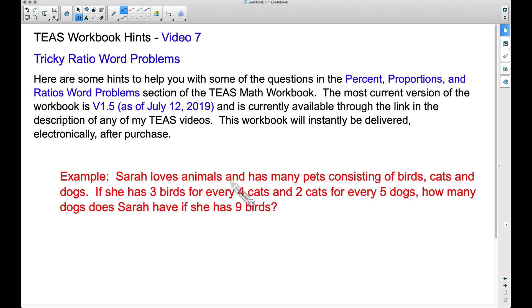So our example: Sarah loves animals and has many pets consisting of birds, cats, and dogs. If she has three birds for every four cats and two cats for every five dogs, how many dogs does Sarah have if she has nine birds?